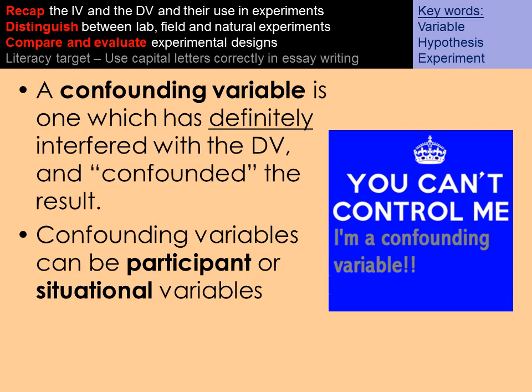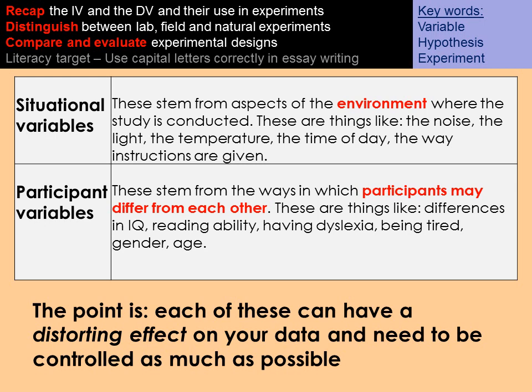A confounding variable is like an extraneous variable, but it is one that has definitely interfered with the DV and therefore confounded or changed the results. Confounding variables can also be a participant or a situational variable — think of a confounding variable as an umbrella term including both. A situational variable is a variable from the environment where the study has been conducted, such as a loud noise, a cold temperature, or asking people at night to remember things. Participant variables refer to the ways in which participants differ from each other — differences in IQ, reading ability, learning disabilities, tiredness, gender, or age. Both of these can have a distorting effect on data and every experimenter should try to control them as much as possible.